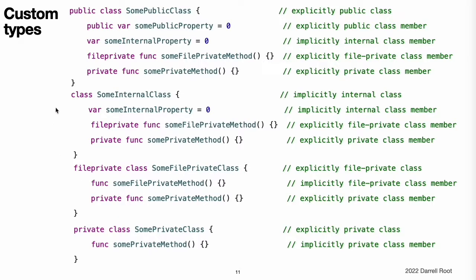If you define a type's access level as internal or public, or use the default access level of internal without specifying an access level explicitly, the default access level of the type's members will be internal. A public type defaults to having internal members, not public members. If you want a type member to be public, you must explicitly mark it as such. This requirement ensures that the public-facing API for a type is something you opt into publishing and avoids presenting the internal workings of a type as public API by mistake.